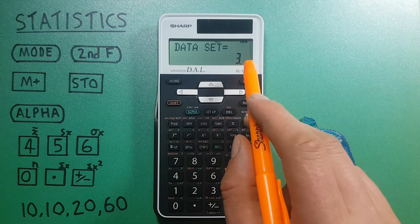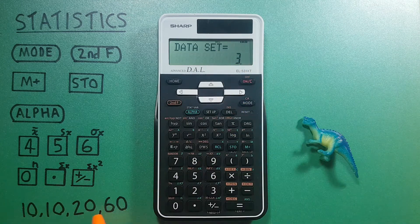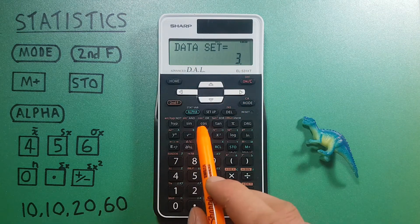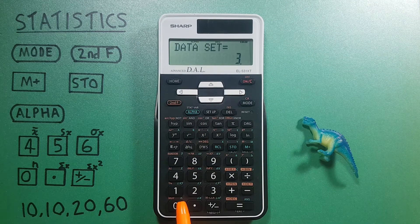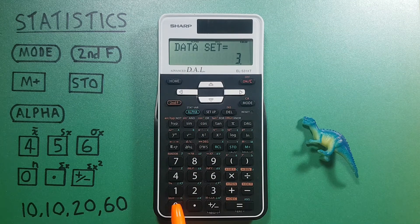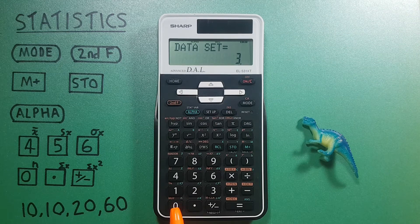But what we can do to confirm we actually have four pieces of data is press the alpha key and then come down to the zero with the N above it. What this does is tell us how many pieces of data we have in our data set.